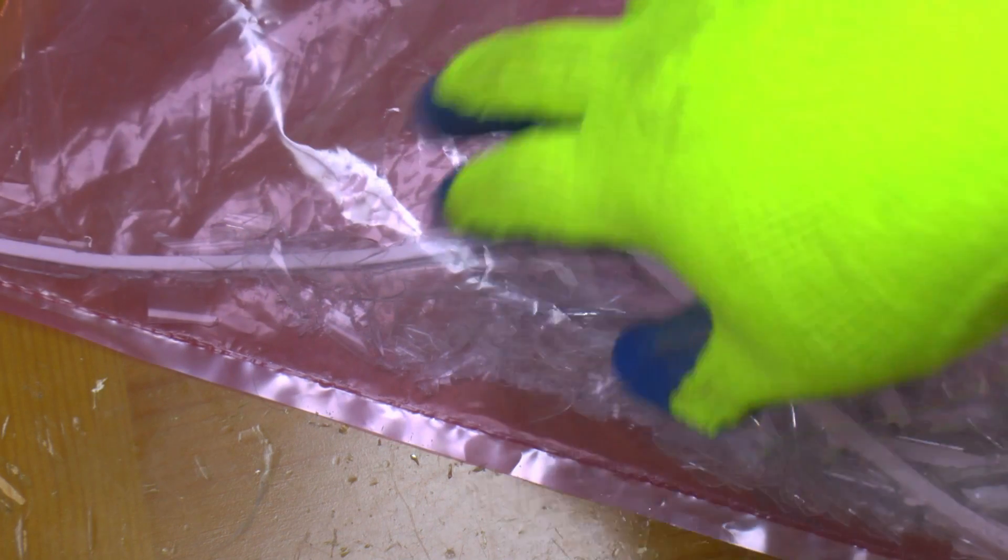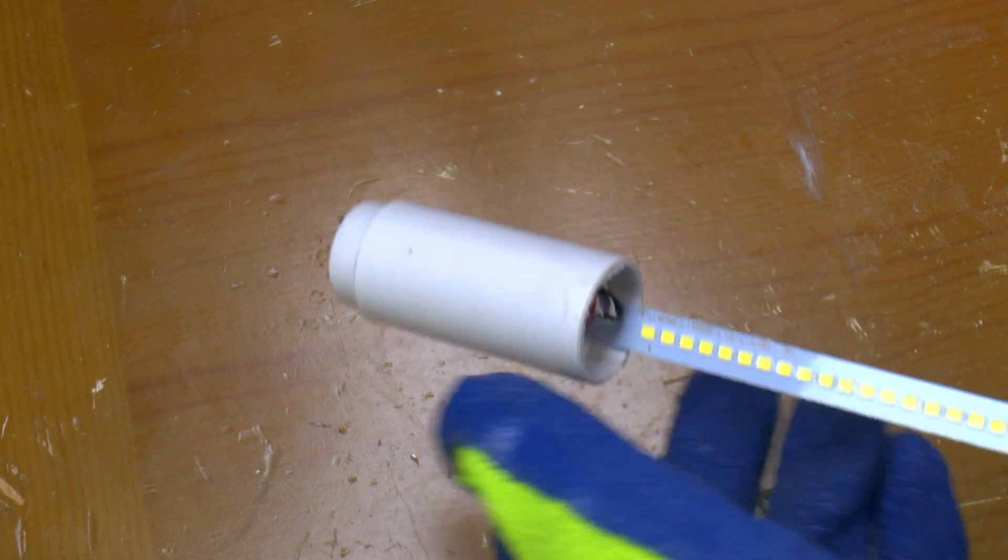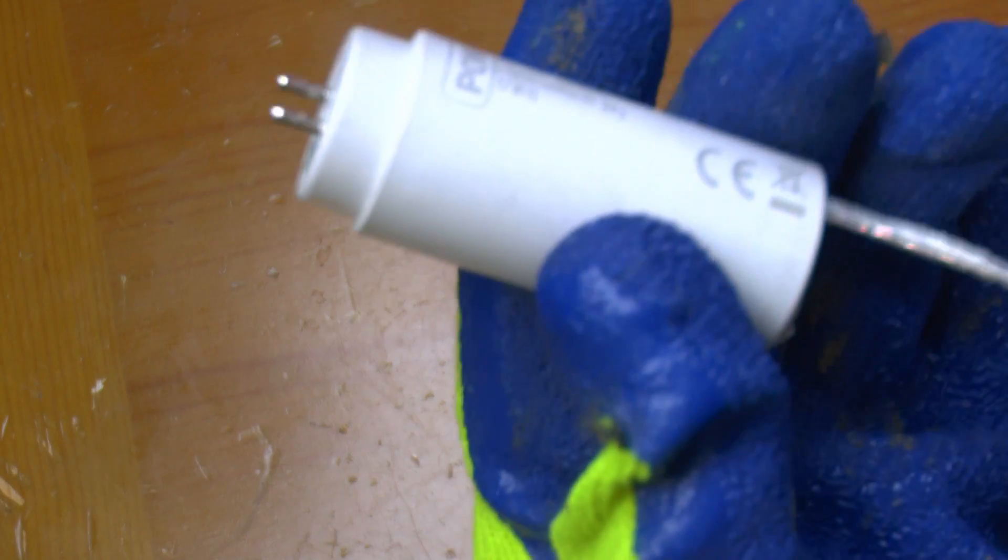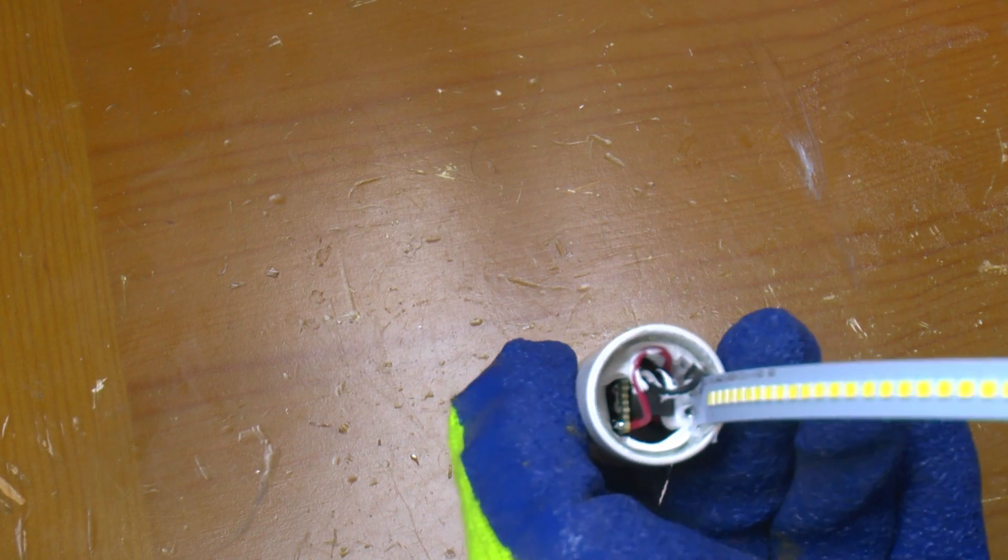Well that was messier than expected. I managed to cut off the double-sided tape to get some of the glass off so at least most of the strip is fine. It's just the ends now to take a look at. This is the power end. Let's get this open.